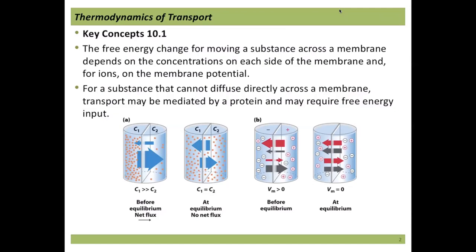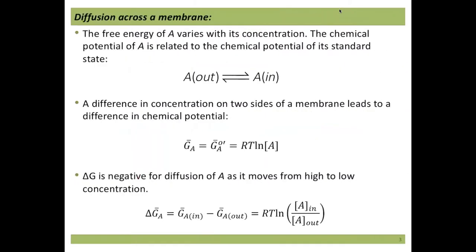Let's talk about free energy and why things would move. We're going to throw some equations at you, so just sit back and believe. We can set up an equilibrium-like equation — we're not undergoing a chemical reaction, but if we have substance A outside a cell in equilibrium with substance A inside, we can set up a delta G equation and determine that delta G is negative for diffusion of A moving from high concentration to low concentration — a spontaneous process.